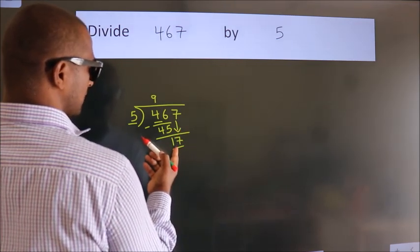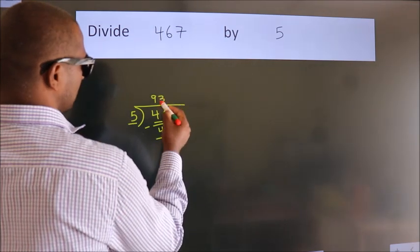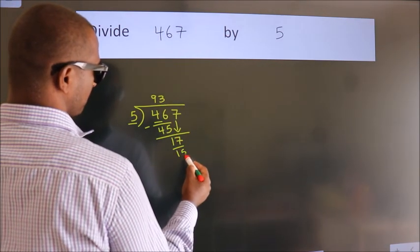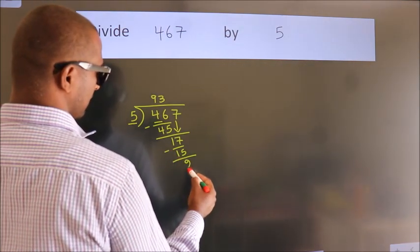A number close to 17 in the 5 table is 5 threes, 15. Now we subtract. We get 2.